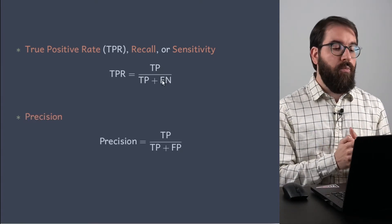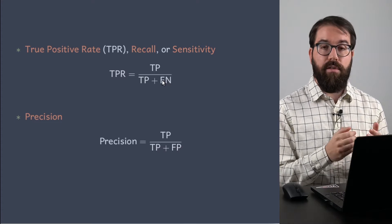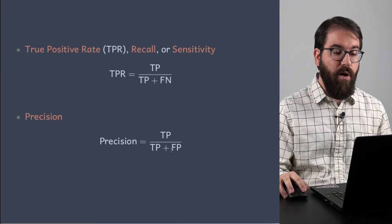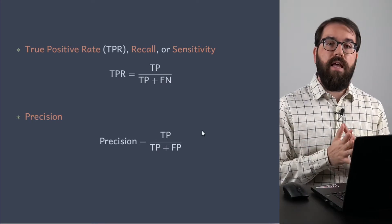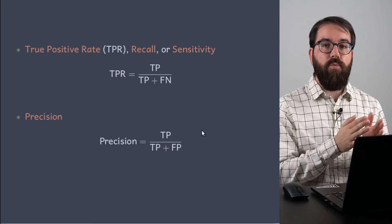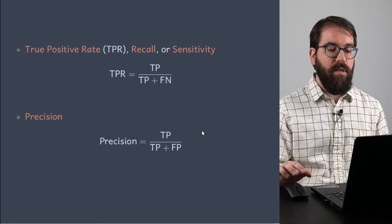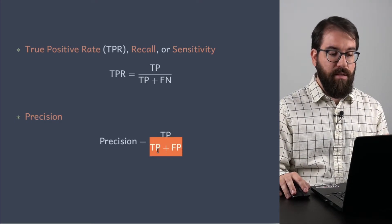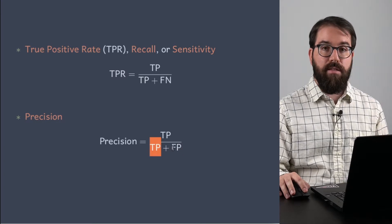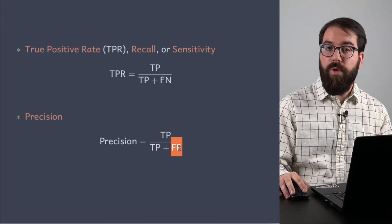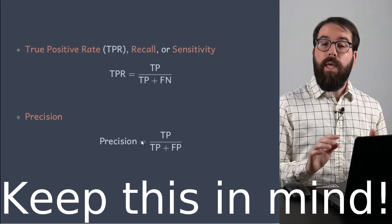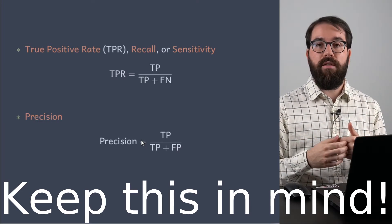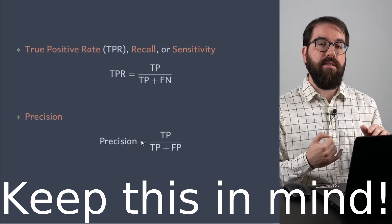What's precision? Precision is the true positives over the true positives plus false positives — very similar to recall, but now we have false positives in the denominator. This tells us the amount of positives that we got right from what we are predicting as positives. So recall is what the model is recalling from the truth; precision is what the model is getting right from what it's saying is positive.